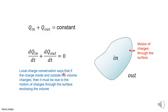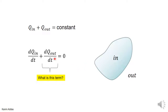Local charge conservation says that if the charge inside and outside changes, this must be due to the motion of charges through the surface. If the charge inside is getting bigger, there must be charges moving from outside to inside; if the charge outside is getting bigger, charges must be going from inside to outside — but they have to pass through the surface. This is what we call local charge conservation. What is dQ_out/dt in terms of the current through the surface?